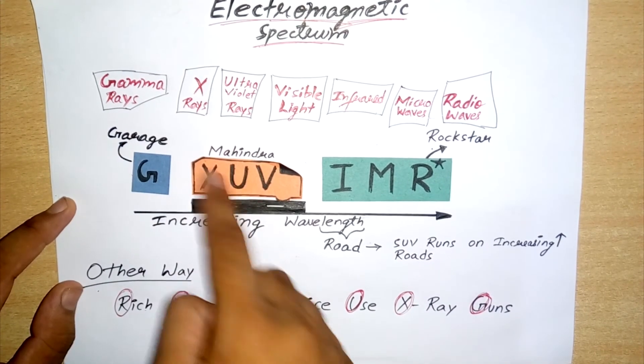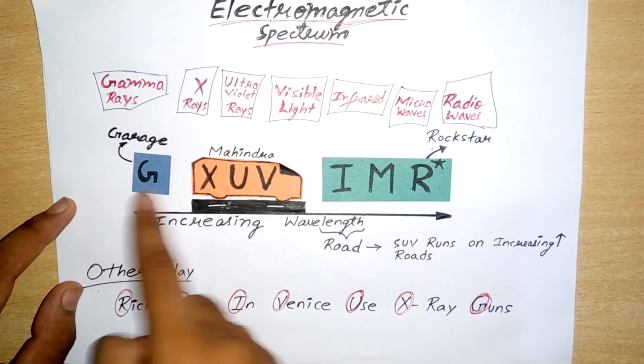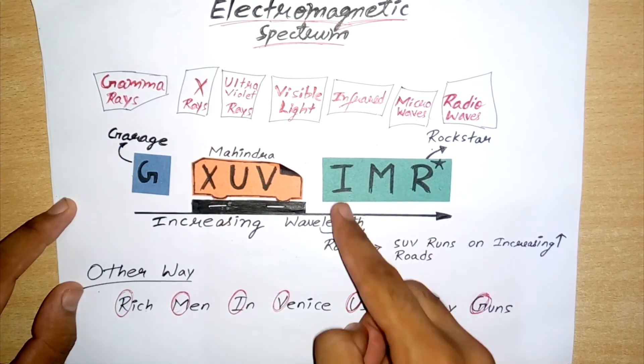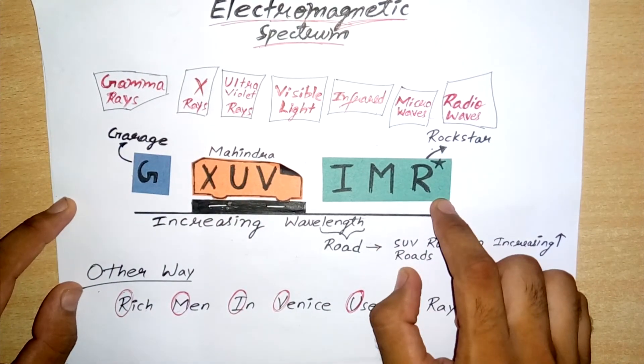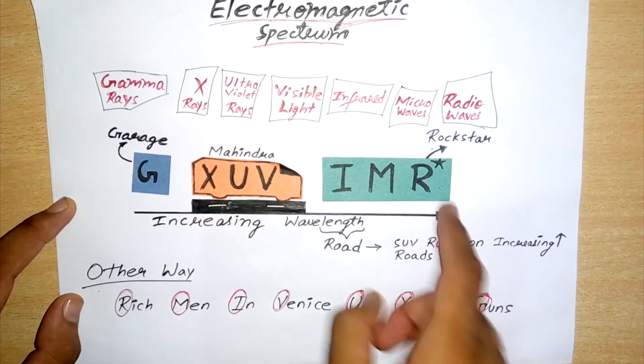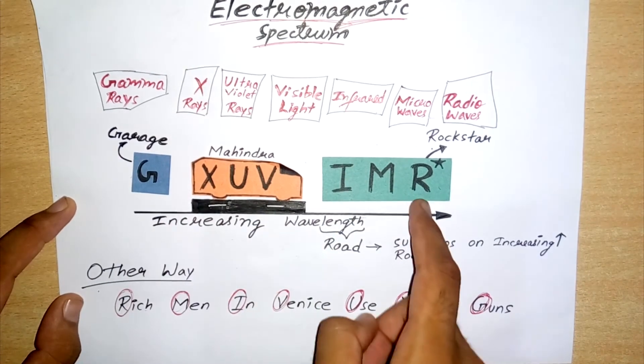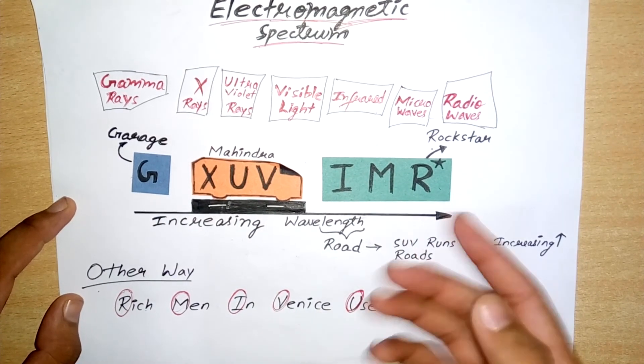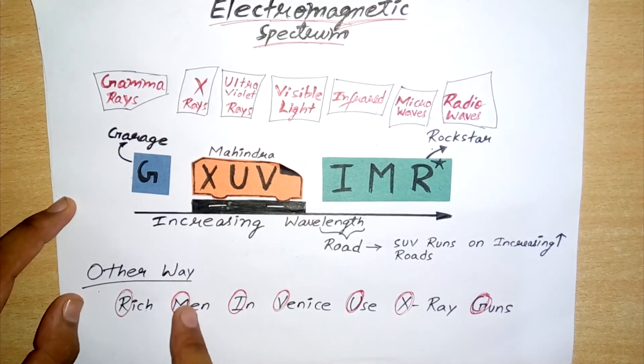And IMR is I am rockstar. This is one way of remembering it, memorizing this. Or there is another way, or a mnemonic.